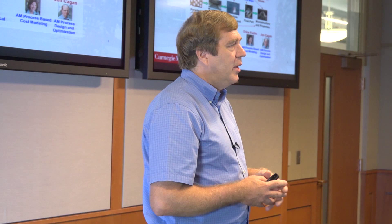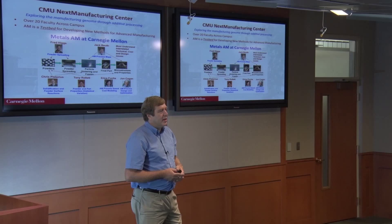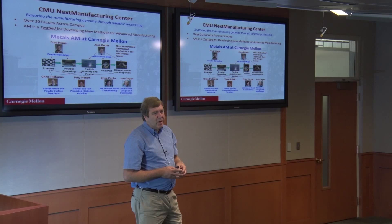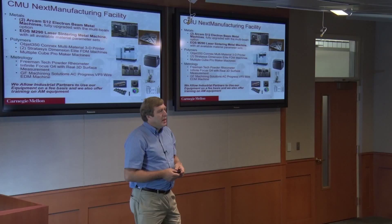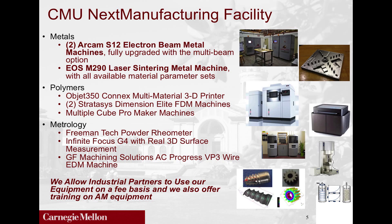There are a lot of other issues associated with these processes. There's powder spreading — Fred Higgs is looking at that. There are materials issues at both the powder scale and part microstructure scale — Chris Pistorius and Tony Rollet are looking at those. There are also cost concerns; if you're considering adopting additive manufacturing, you'll be concerned about cost benefits versus traditional manufacturing — Erica Fuchs is looking at that. We're also looking at design issues. We have equipment here including two ARCAM electron beam direct metal machines, fully upgraded with the multi-beam option, and also the EOS M290 laser sintering machine. We are allowing external users to access our equipment.